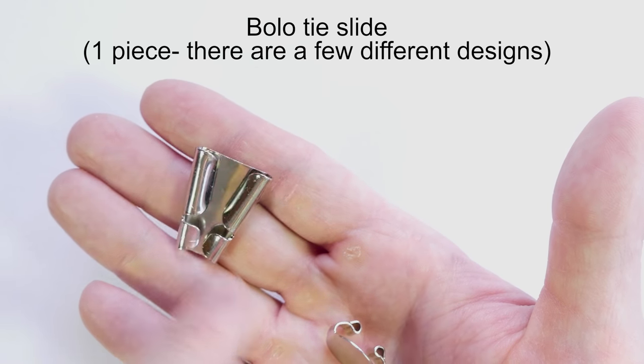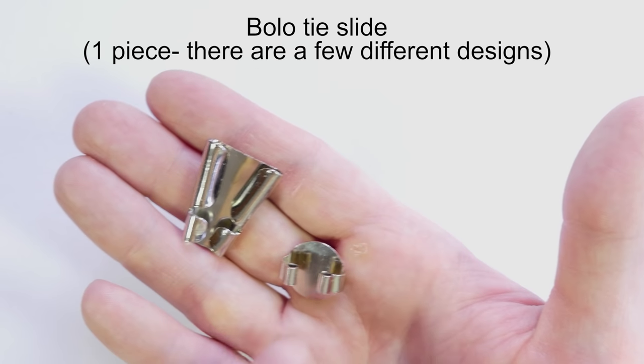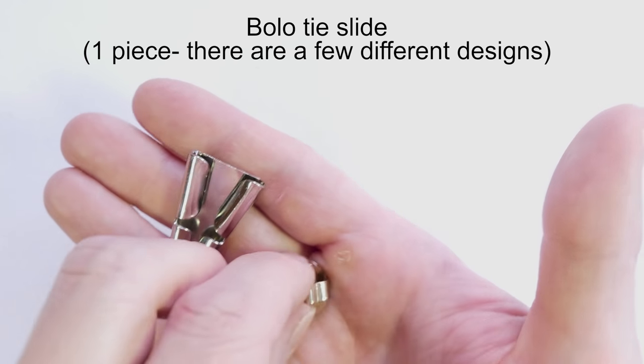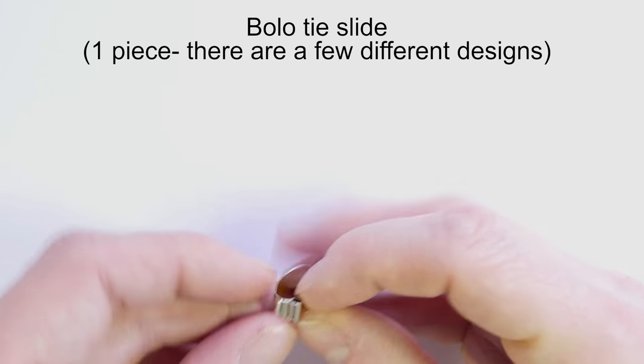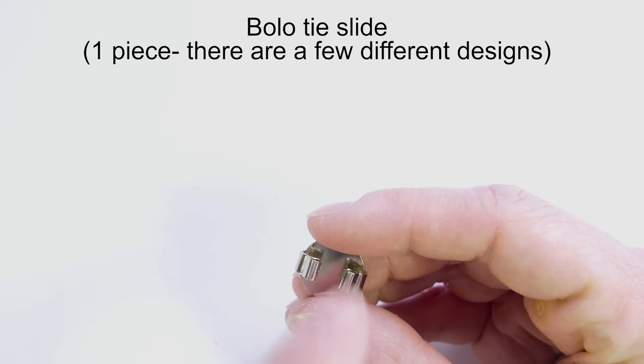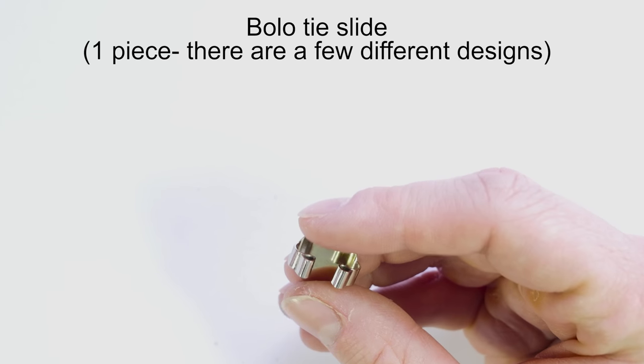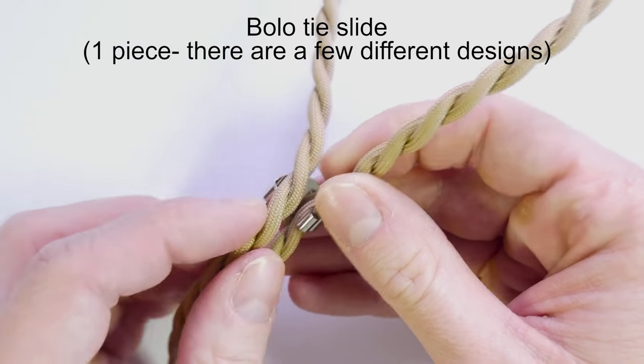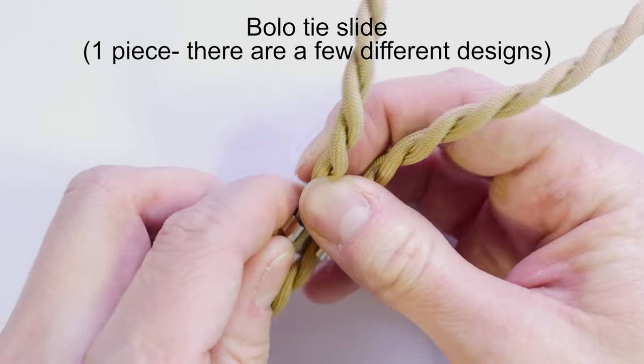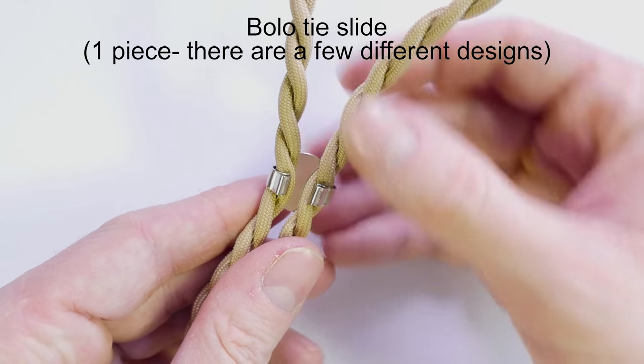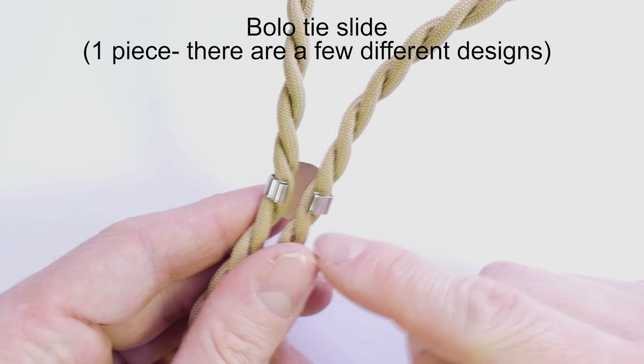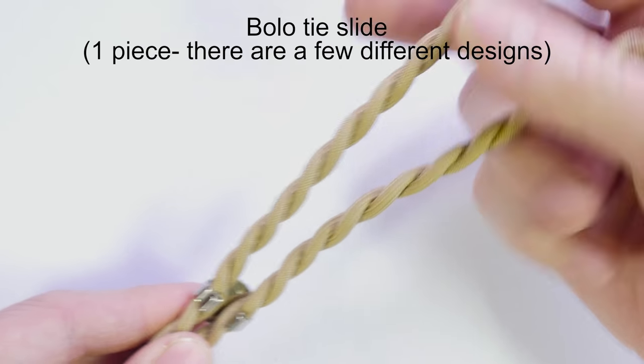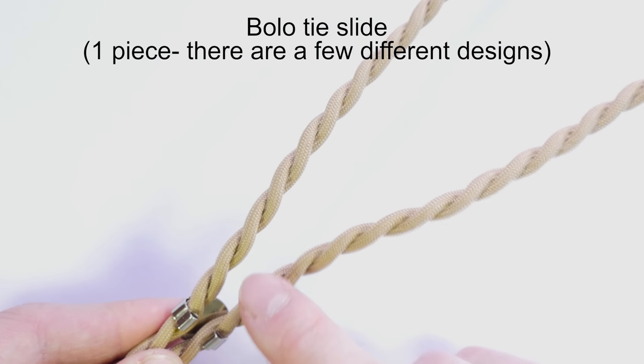Onto the back part, where we have two channels or legs, we're going to attach our two ends of our cord. Like this. The slide then slides up and down and adjusts the size of your neck loop.